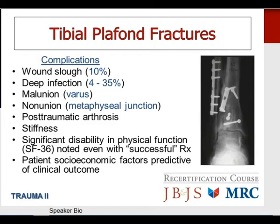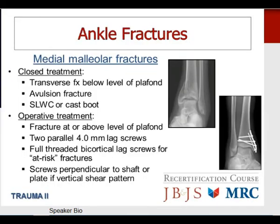Regarding ankle fractures — medial malleolus fractures: closed treatment is appropriate for transverse medial malleolus fractures below the level of the plafond as well as avulsion fractures of the malleolus tip, managed with a short leg walking cast or cast boot with weight-bearing as tolerated. Operative indications include displaced fractures at or above the level of the plafond. Two parallel cancellous lag screws are typically placed; in at-risk patients such as those with osteoporosis or diabetes, full-threaded bicortical screws have shown improved results. For vertically oriented shear-type fractures, screws perpendicular to the shaft or plate fixation should be considered.